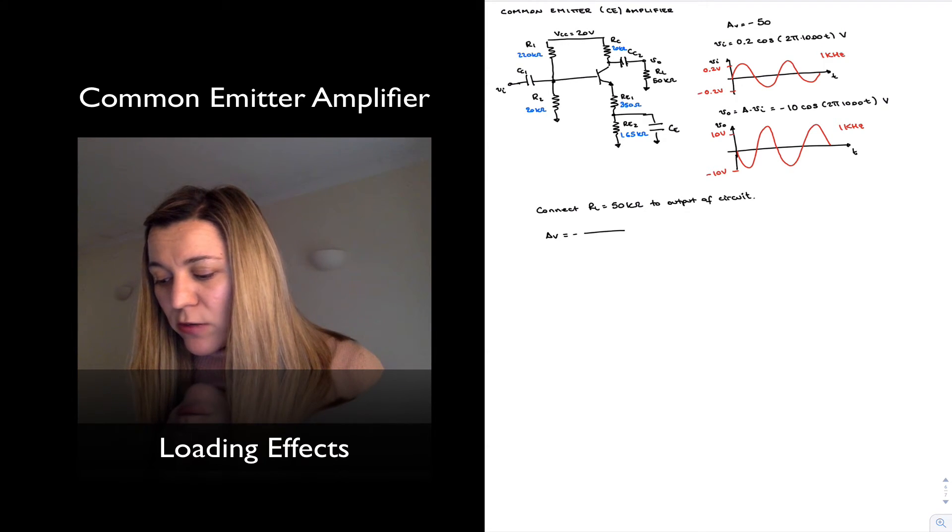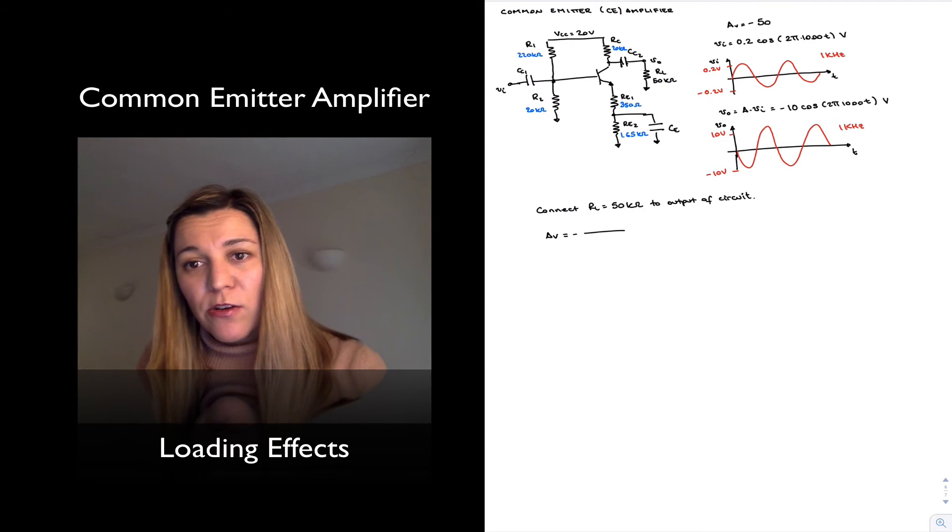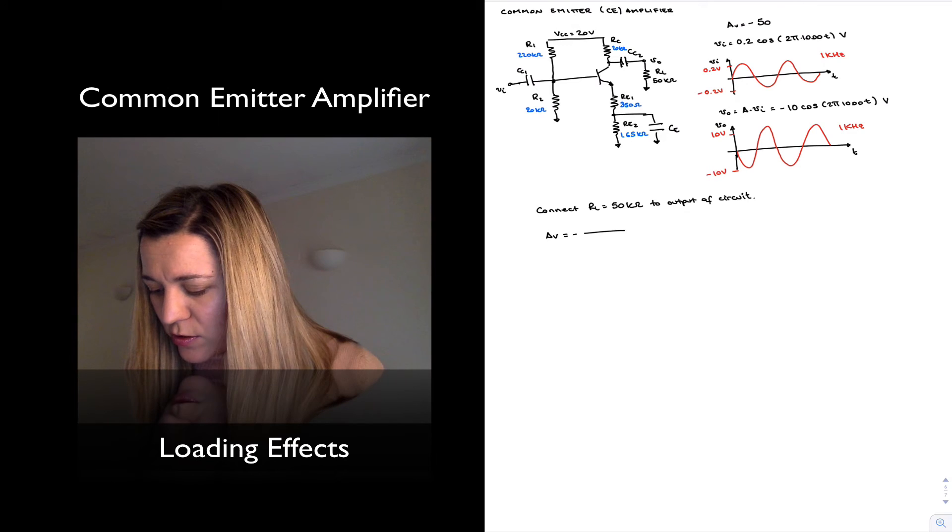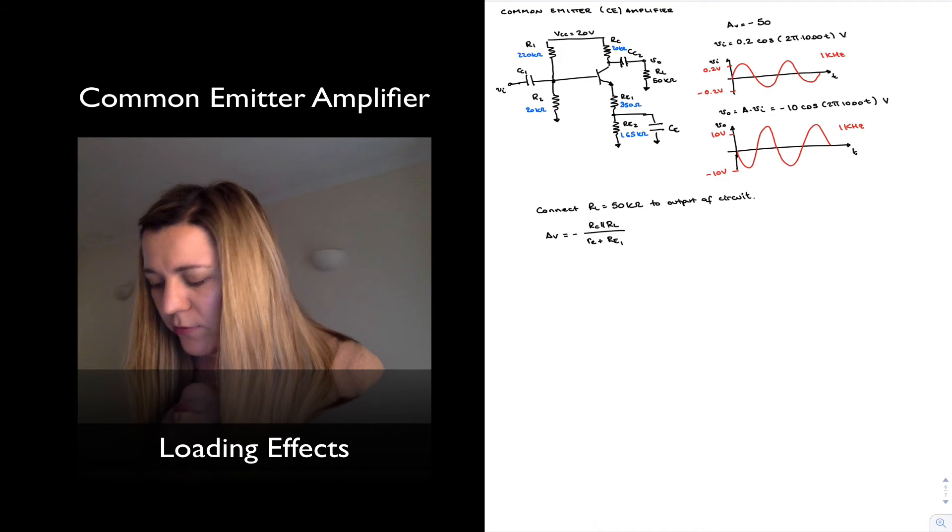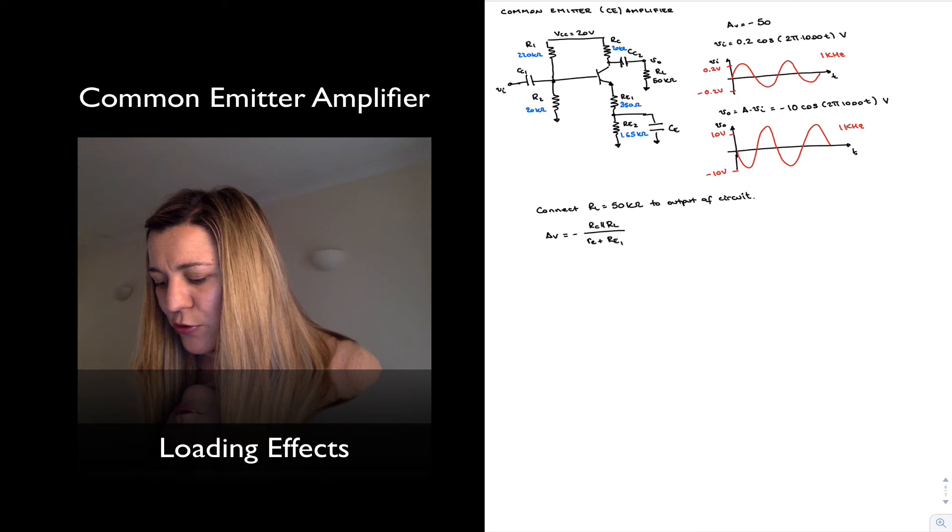it's going to be, CC2 is going to be a short. So I see RC going to an AC ground in parallel with RL going to ground. And so it's RC in parallel with RL divided by little RE plus RE1 because, again, CE also bypasses RE2.